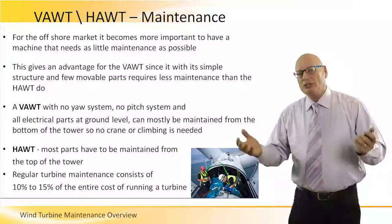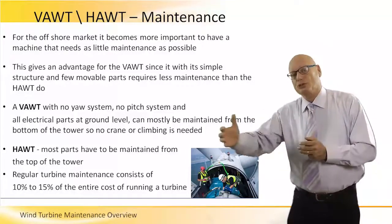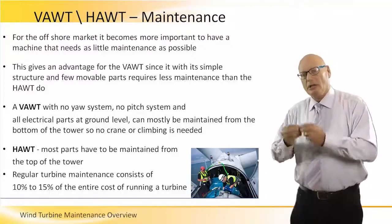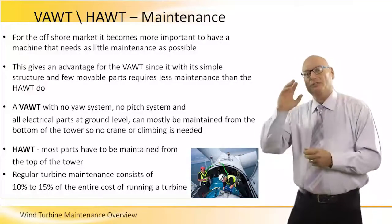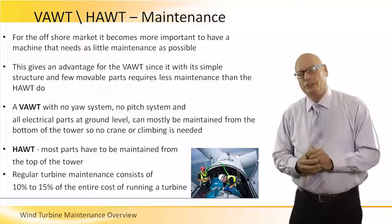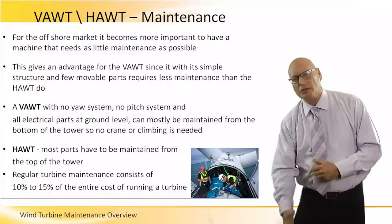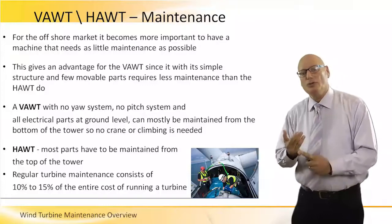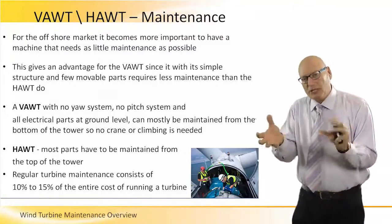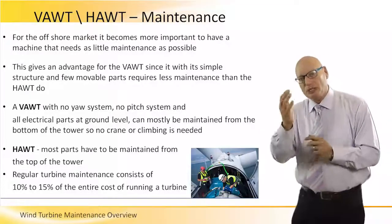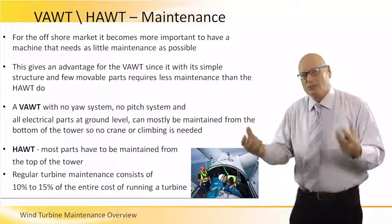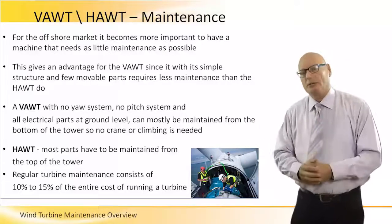When we talk about large farms, especially in the offshore market, it becomes more important to have a machine that needs as little maintenance as possible. It is very costly to maintain something that is 50 miles offshore. By its nature, VAWT has simpler structures — everything is down at ground level. It has no yaw system because it can catch wind from all directions, and no pitch system, so we don't need to rotate the blades to change the angle of attack. This means less mechanical structure, fewer components, and much less expensive maintenance.